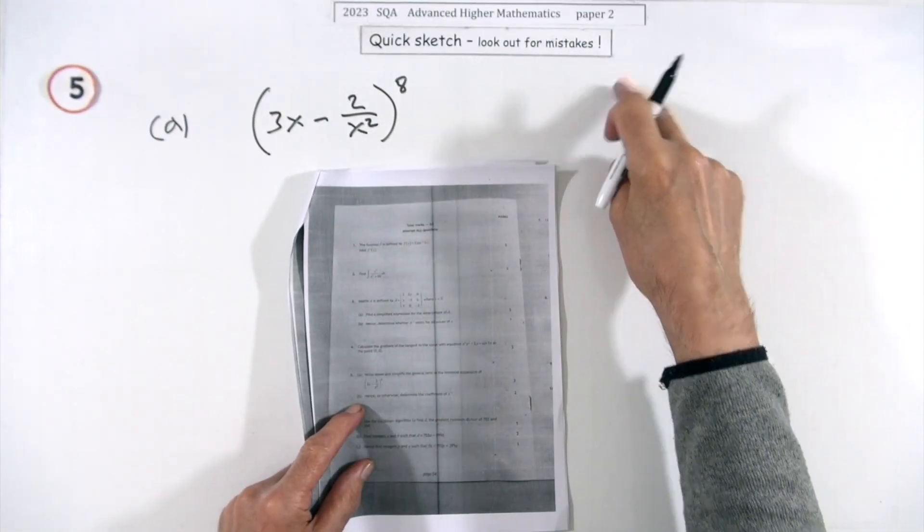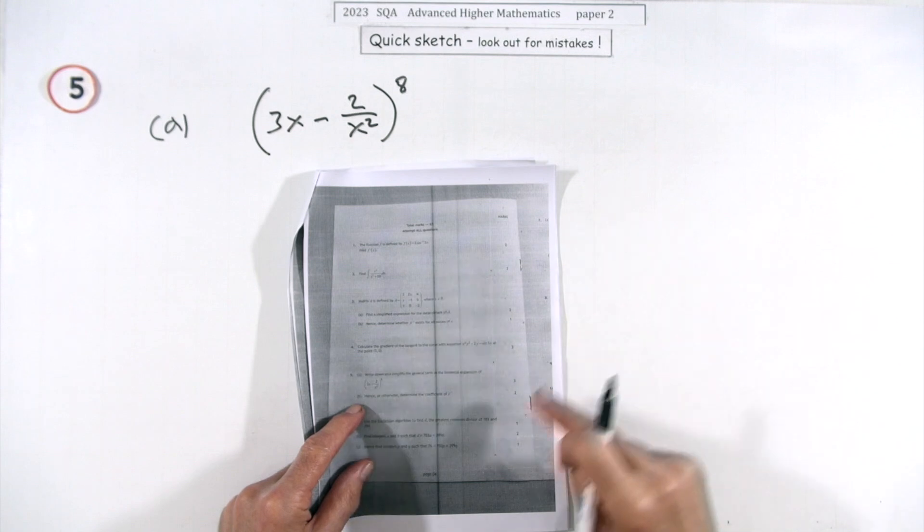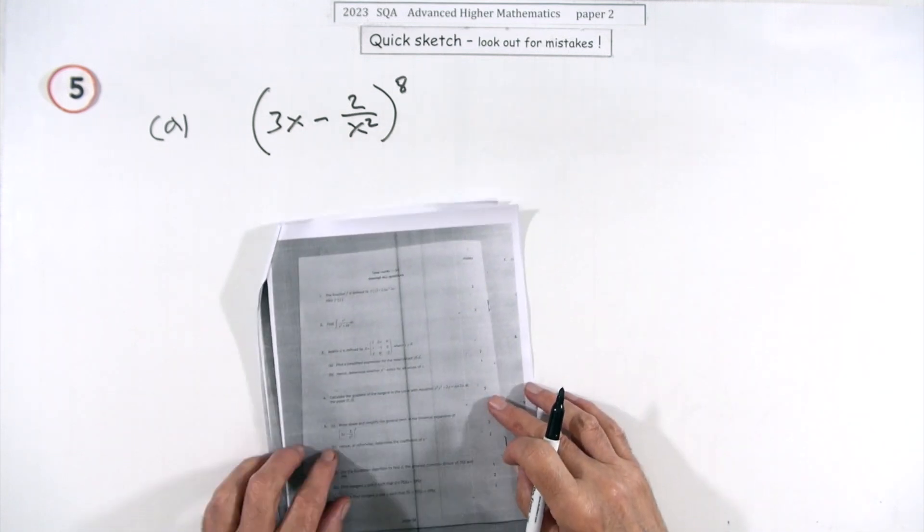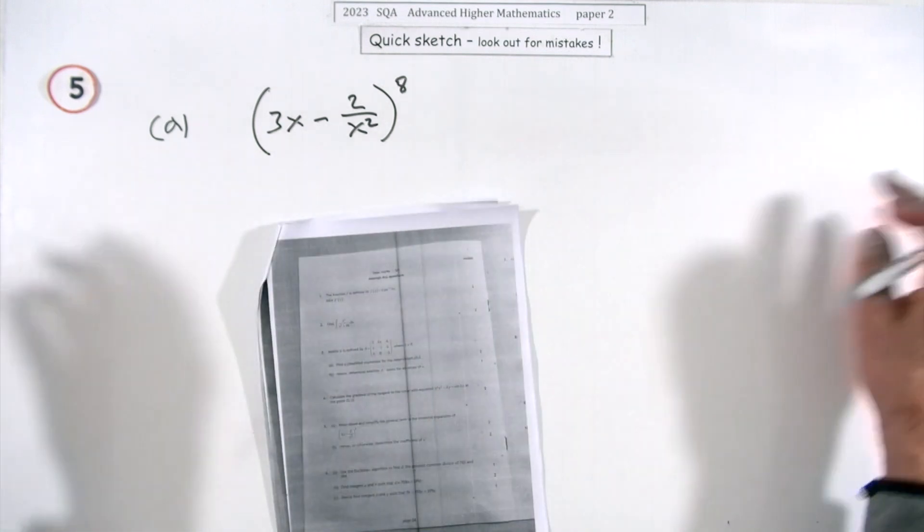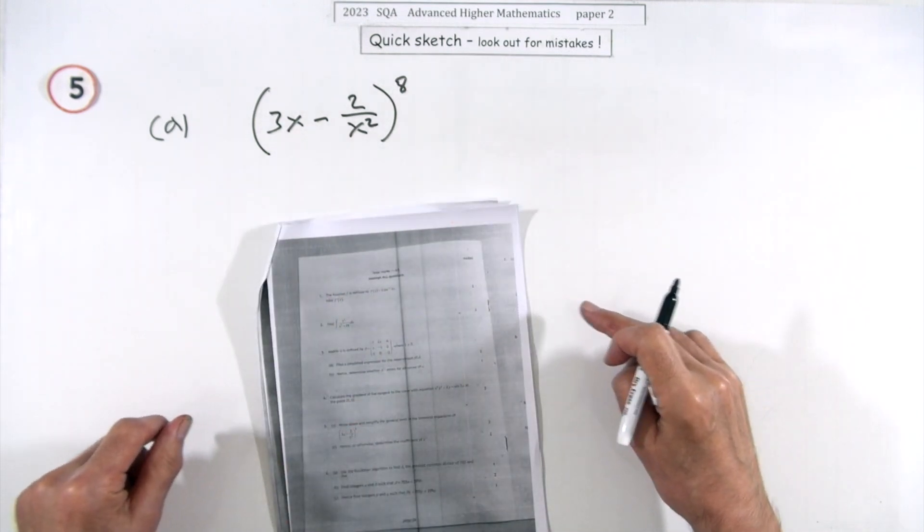So number five then from paper two, the 2023 Advanced Higher Maths. We've got a five mark question for binomial expansion. At least it's not the big long tedious one you would want it to be with any power anyway.